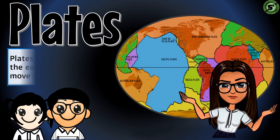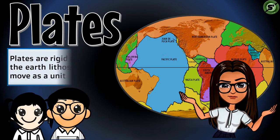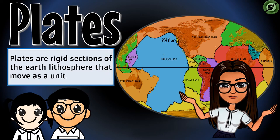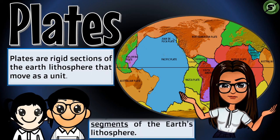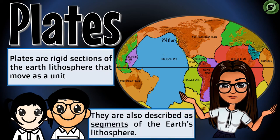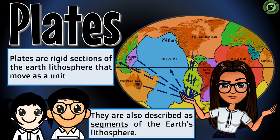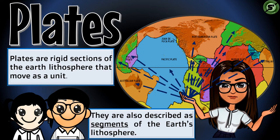What are plates? Plates are rigid sections of the earth's lithosphere that move as a unit. They are also described as segments or pieces of the earth. The earth's lithosphere is not divided equally — some segments are big and others are small. The Pacific Plate is an example of a big plate, and the Philippine Plate is a small one.